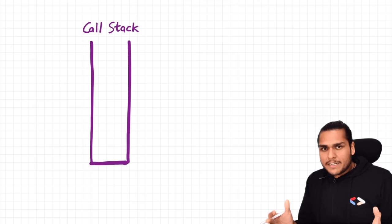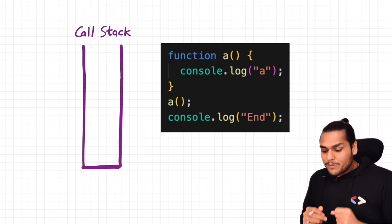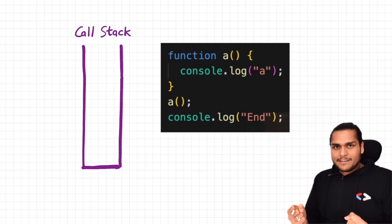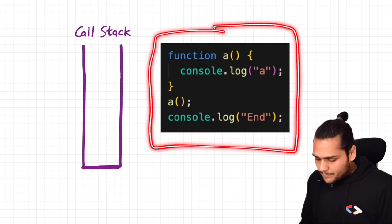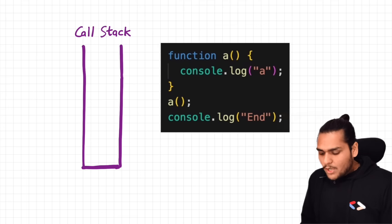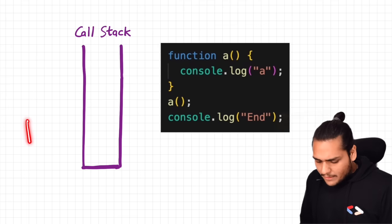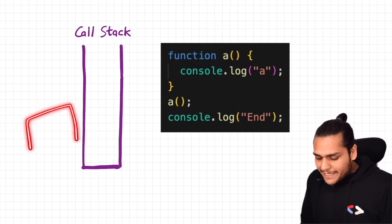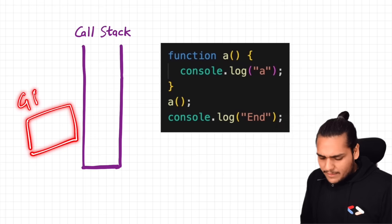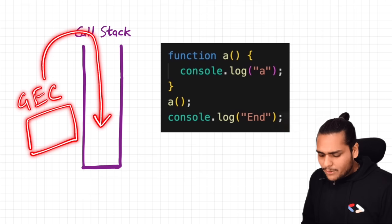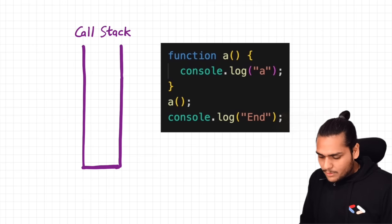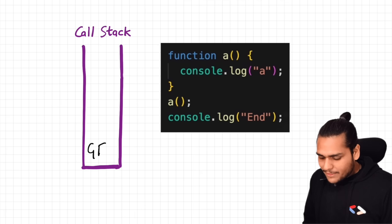Let us now see with the help of an example. Suppose if we have to execute this piece of code. Whenever any JavaScript program is run, a global execution context is created, and this global execution context is then pushed inside the call stack. So we have this global execution context inside our call stack.